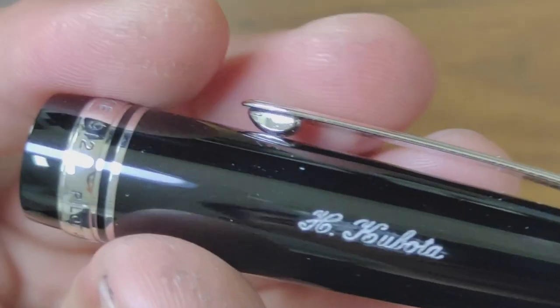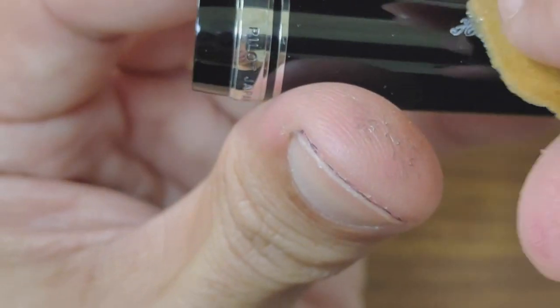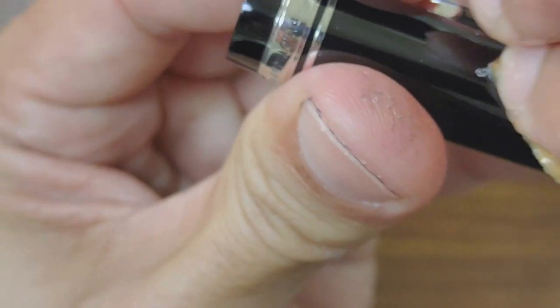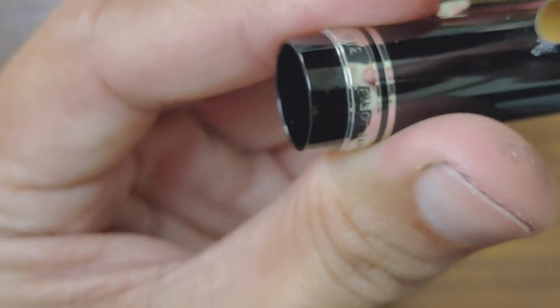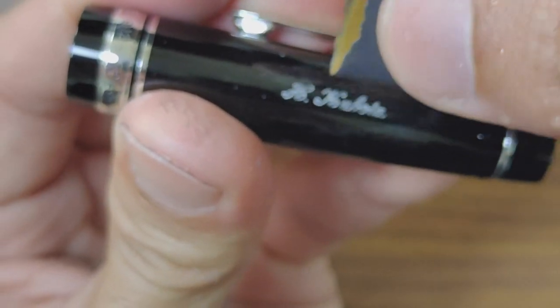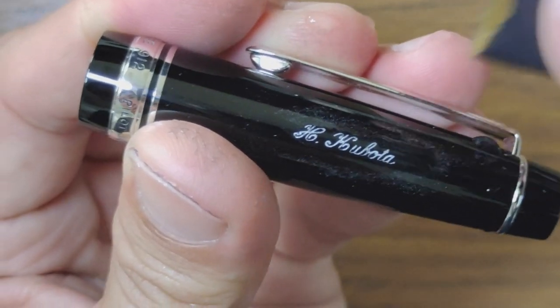So I'll be using the 600 or 700 grit sandpaper, dip it in water first, and then I'm just going to go for it. Focus, focus, focus, okay.